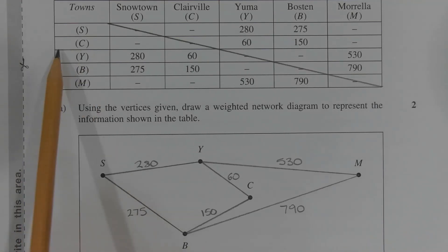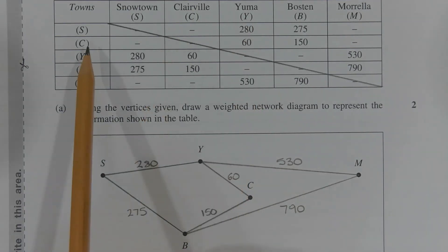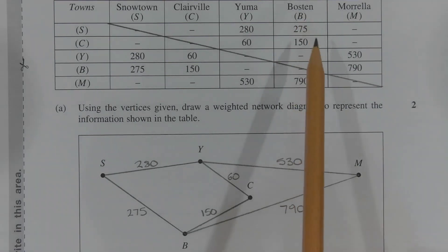Looking at the second row of the table, we can see that town C is connected to town Y and the distance between those two towns is 60 kilometers. Town C is also connected to town B and the distance between those two towns is 150 kilometers. This is indicated by drawing an edge between vertex C and vertex Y and writing 60 here, and also drawing an edge between vertex C and vertex B and writing 150 here.